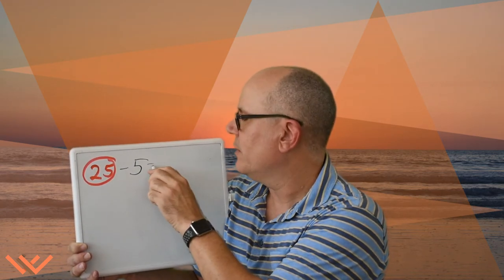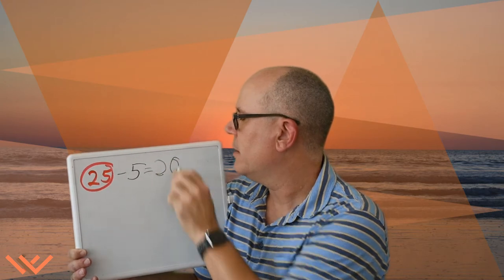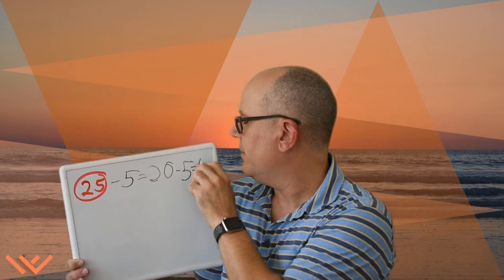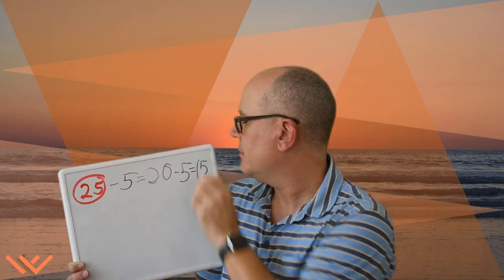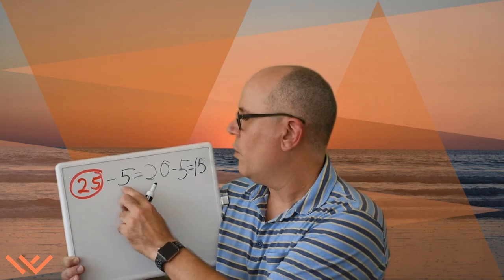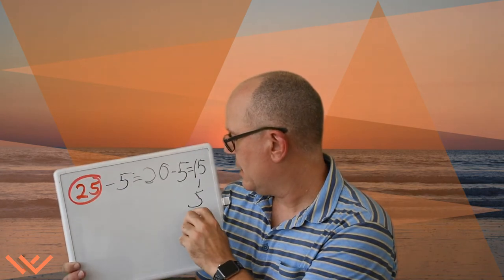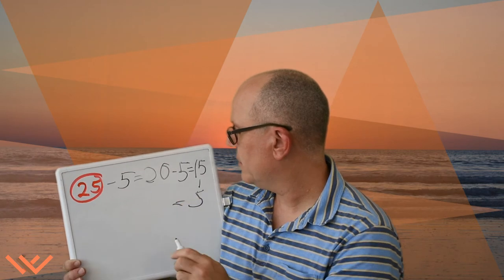Well, we know there's five children and there's 25 cupcakes. So let's say 25 minus 5 — that's one cupcake per child right here — so that equals 20. We still have more cupcakes to give out. So 20 minus 5 equals 15.